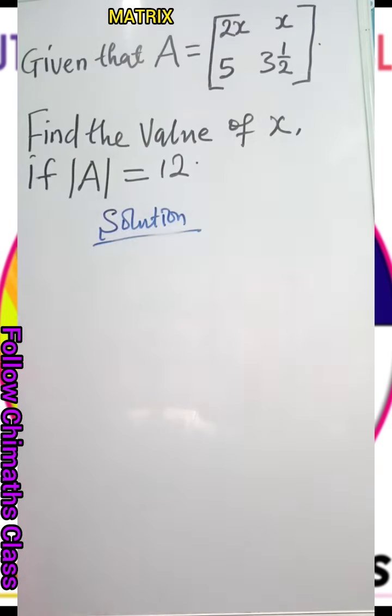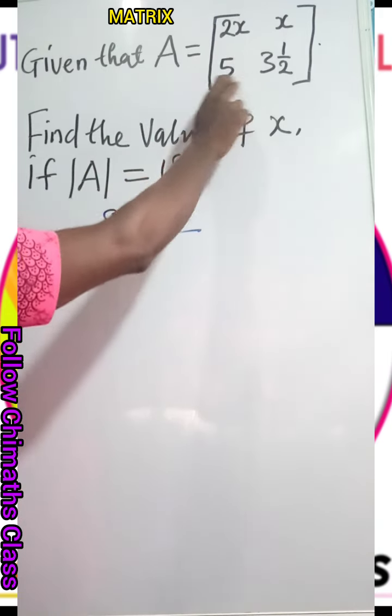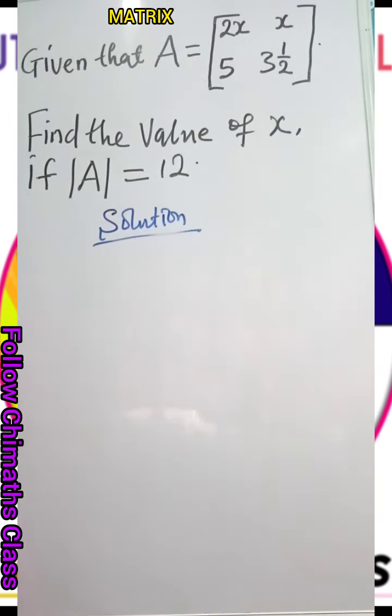Recall, to find the determinant of a matrix, we multiply the leading diagonal and then subtract it from the lagging diagonal.